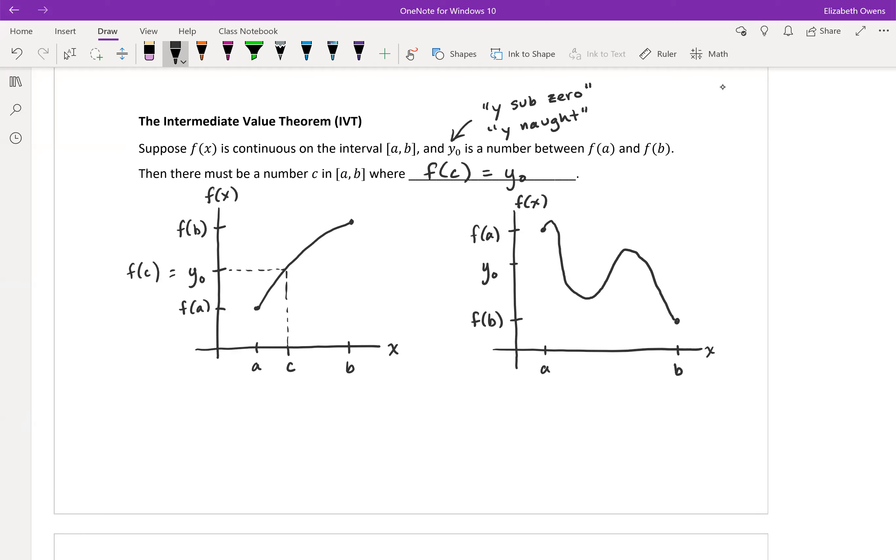That's a continuous function still, no discontinuities involved there. But notice with this function, there must be a number c in our interval for f(c) equals y not, but here we happen to have more than one c value where f(c) equals y not. So this is okay, this is all right according to the IVT. We've got one c value right here, f(c) equals y not. We could say this is c2 and this is c3, and that is still okay.